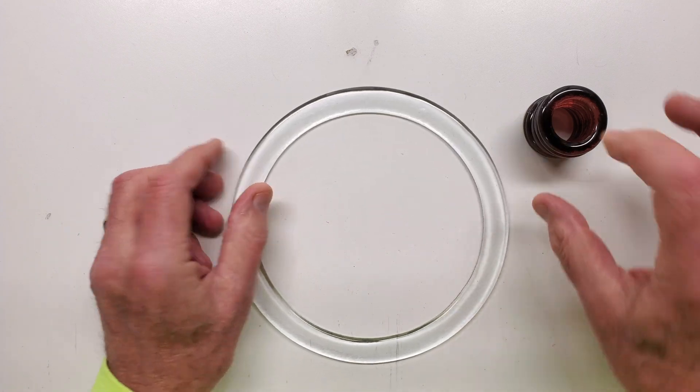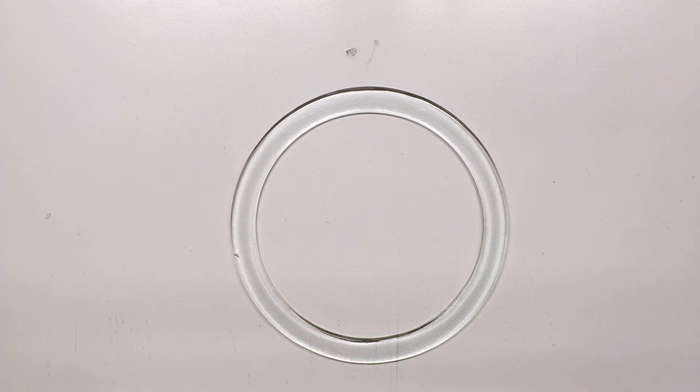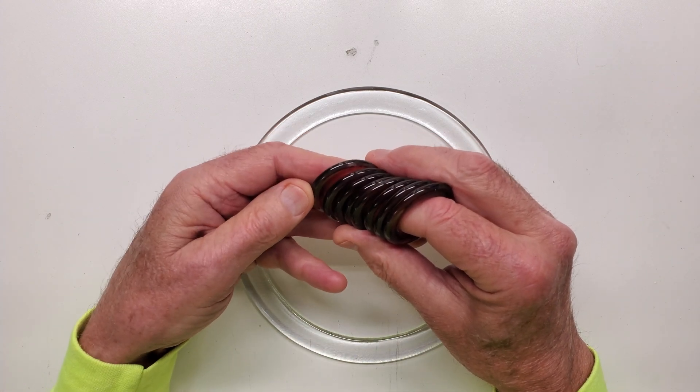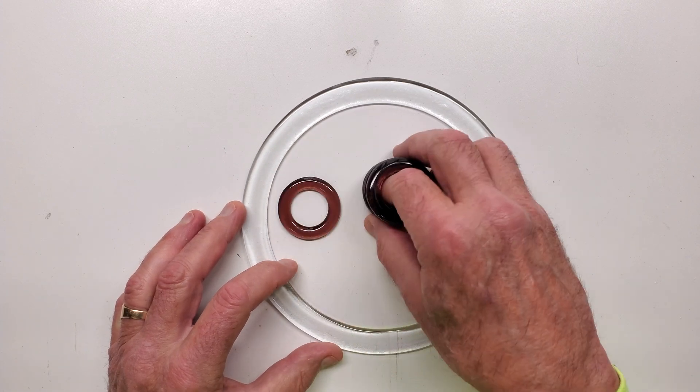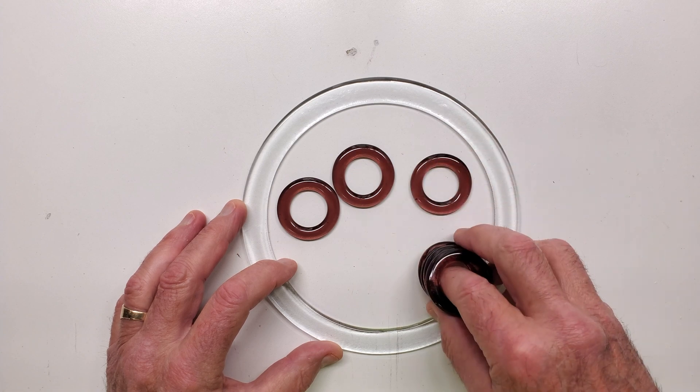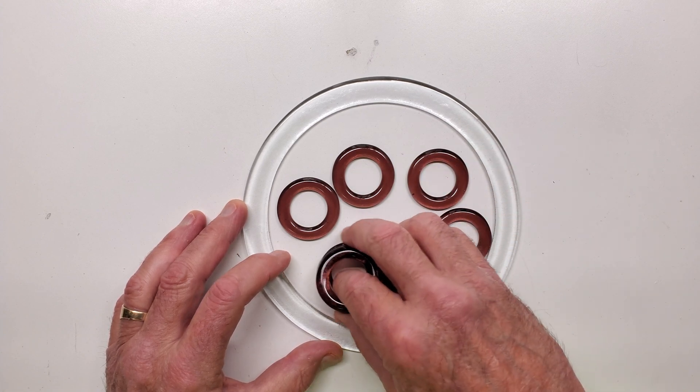And in my last video, I made a bunch of two-inch rings. As it turned out, not planned, eight of the two-inch rings I made fit almost exactly around the inside of the clear ring.